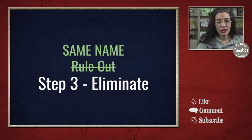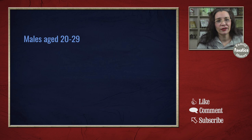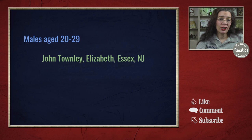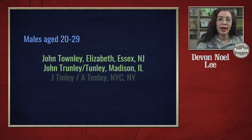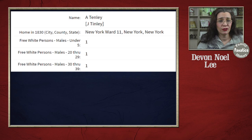For the 20 to 29 range, there are three results. John Townley of Elizabethtown, New Jersey — that's exciting because I've already decided that is likely John Townley from Cincinnati, Ohio, but I need to be careful. Then there is a John Trunley of Madison, Illinois. And then John Tinley — or A. Tinley depending on how you read the record — over in New York City. New York City is a likely possibility because it's not far from Elizabethtown; Elizabeth is just across the waterway from Staten Island, so New York is still in the running.